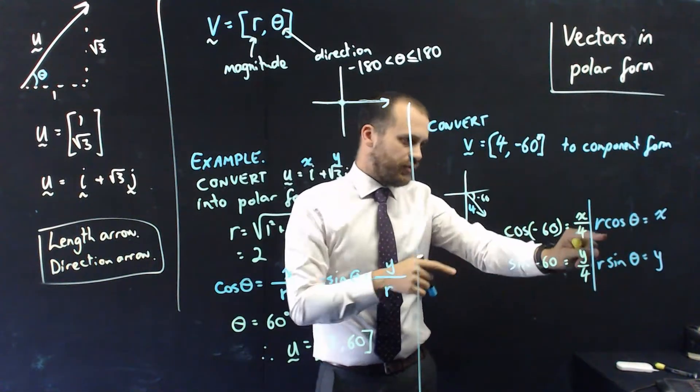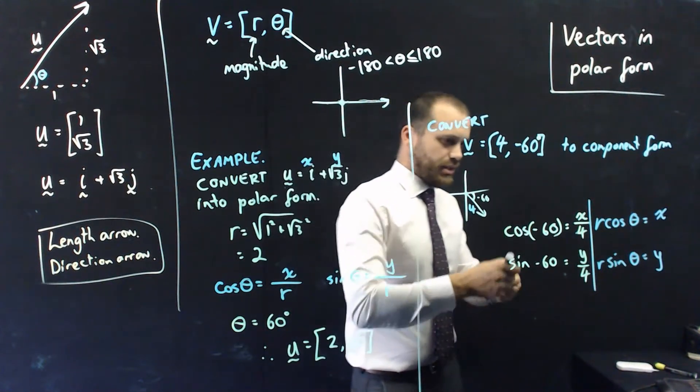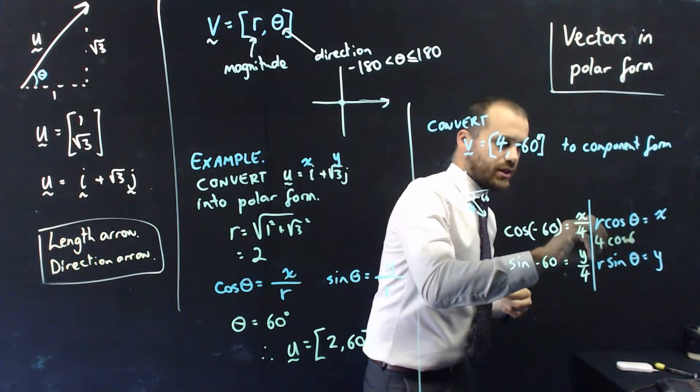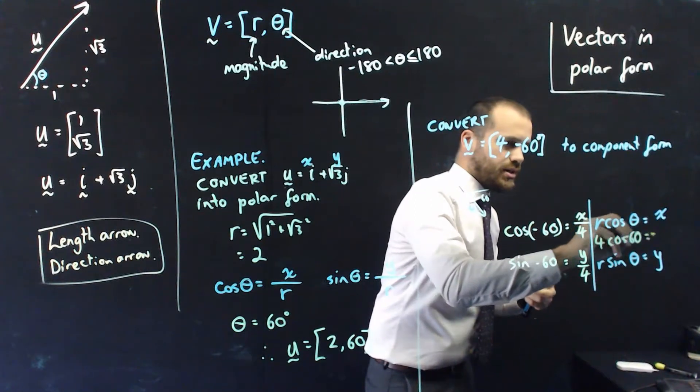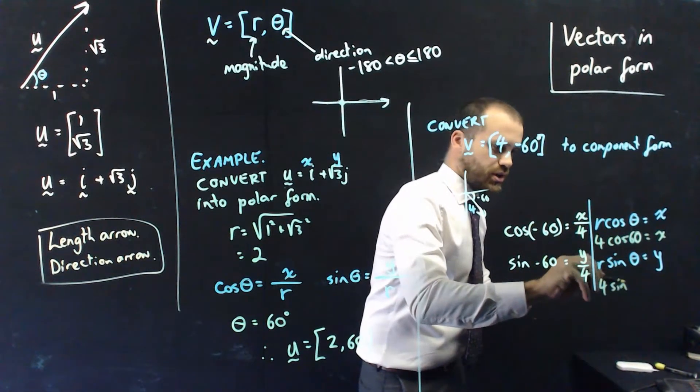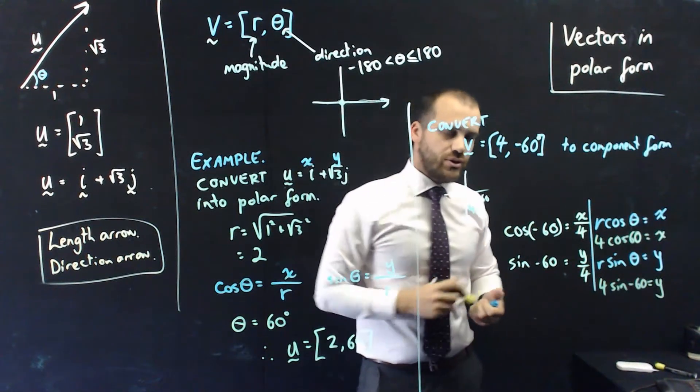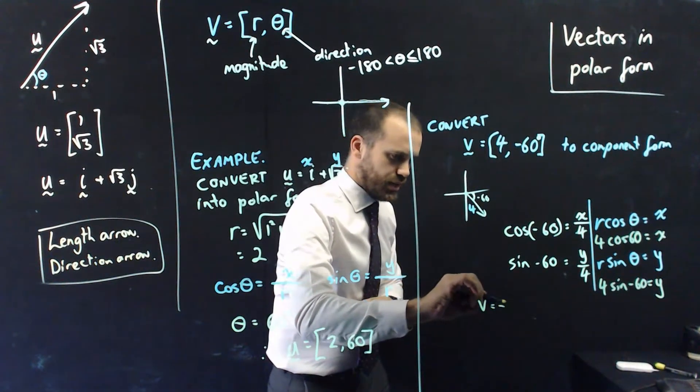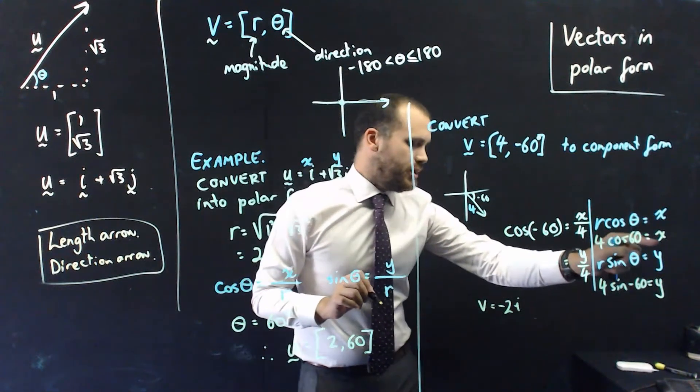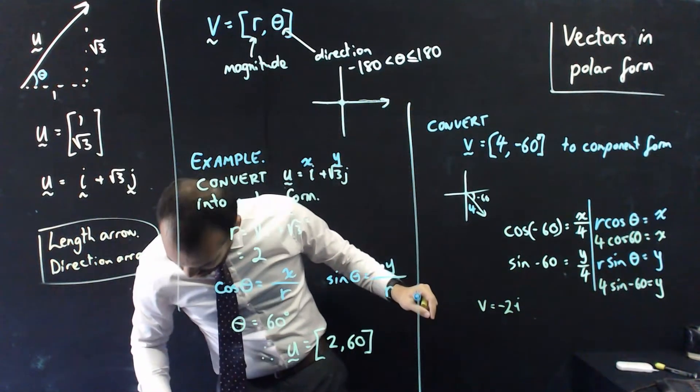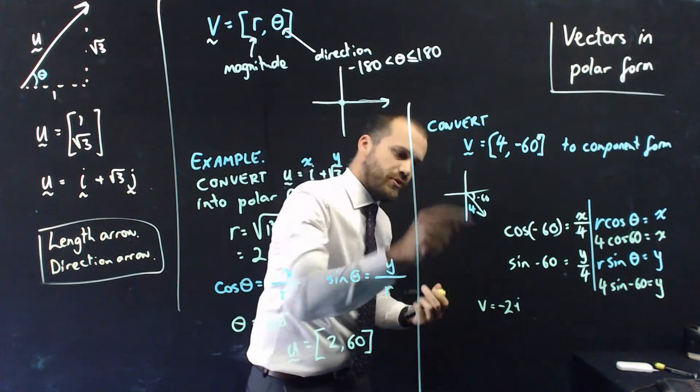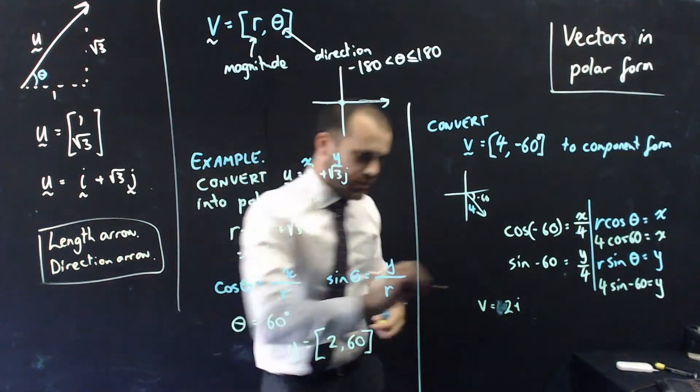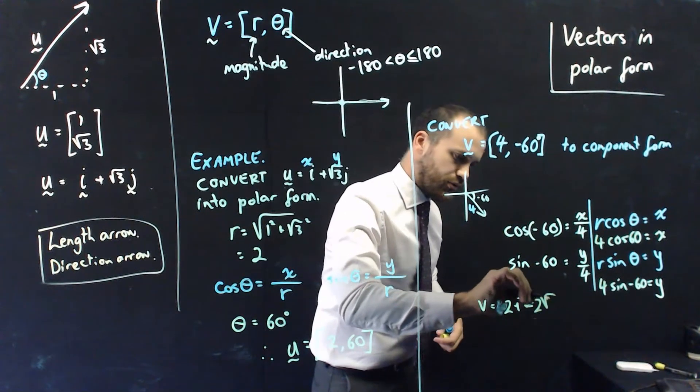solving that, I get this particular one is going to be 4 cos negative 60 equals x and this is going to be 4 sine negative 60 equals y. If I put those two things into my calculator, I'll get x and y values. So, v is equal to, the x value here is positive 2i, not negative 2. That doesn't make sense because it's moving that way. Positive 2 and the other one negative 2 root 3j.